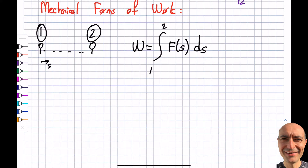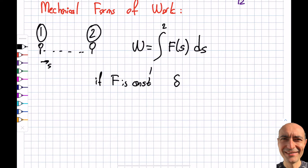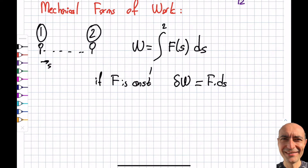If F is constant, I can take it out of the integral. From the previous segment, I said these are path functions, so I cannot write an exact differential — this is an inexact differential. So I abbreviate it as F times some distance s. Force times distance equals work — you need this from physics. This is the energy; we may not always be specific about the difference between energy and work, but now we are.